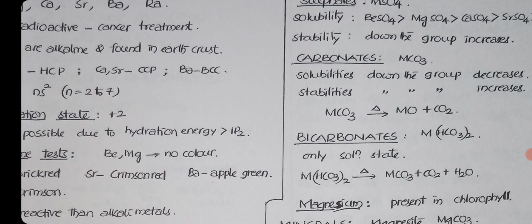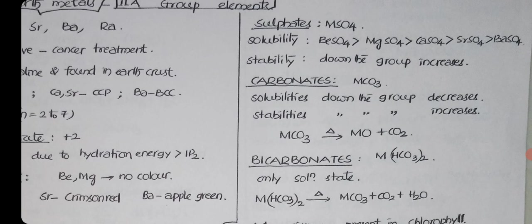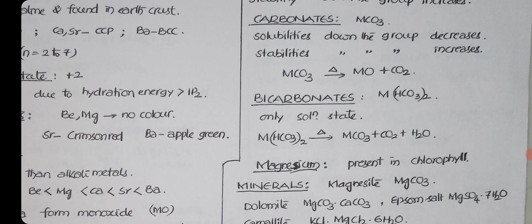Sulfates: sulfate solubility, beryllium sulfate is more soluble. Hydroxides solubility increases. Sulfate solubility decreases. You can check with carbonates also, solubility down the group decreases. Very important: oxides and hydroxides of second group, solubility increases. Carbonates and sulfates, solubility decreases. Bicarbonates are possible only in solution stage.